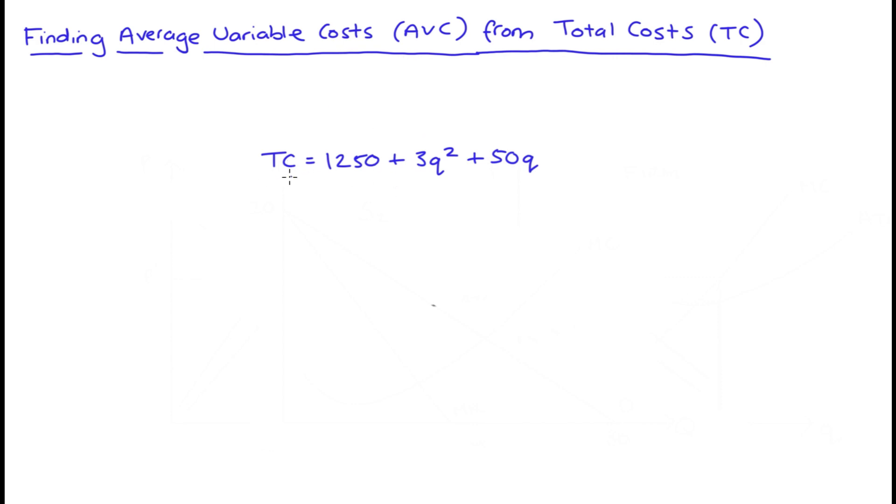Now in the example that I have here, our total cost function is equal to 1250 plus 3Q squared plus 50Q. Now our formula for average variable costs is, we take our variable costs, that's VC, and we divide variable costs by the quantity that the firm produces Q.